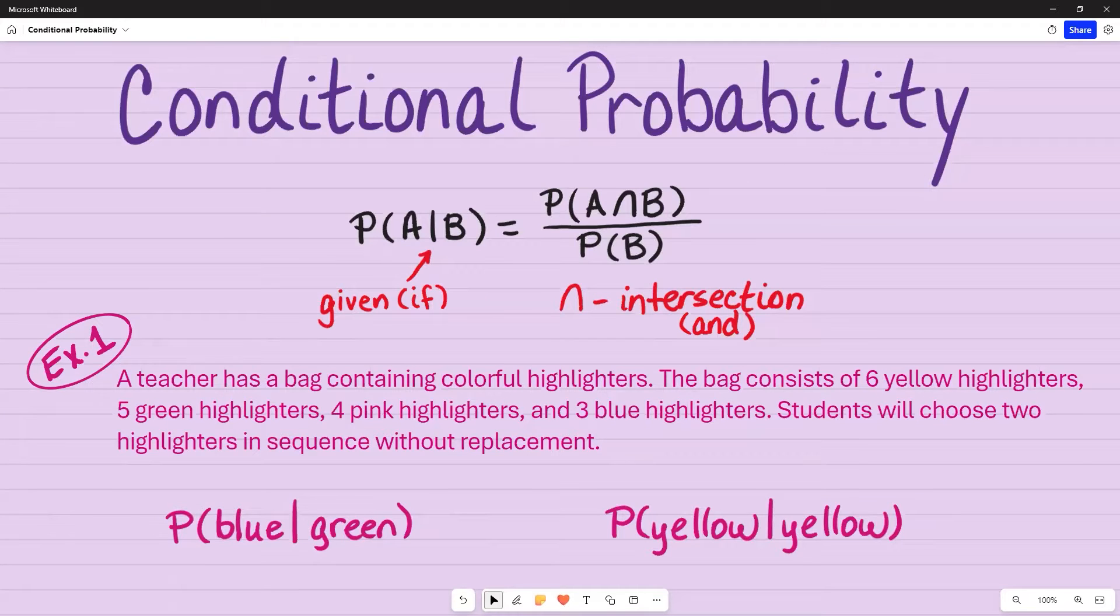Welcome to Mimi's Math Channel. Today I will discuss conditional probability. What you see here is the formula that would normally be used for it, which is the probability of A given B is equal to the probability of A and B divided by the probability of B.